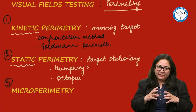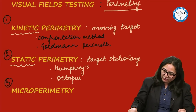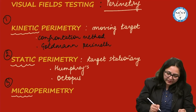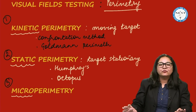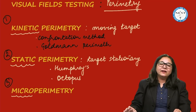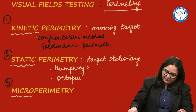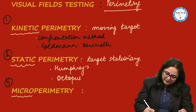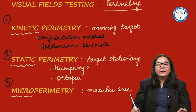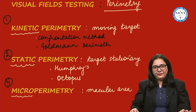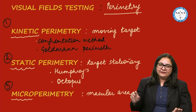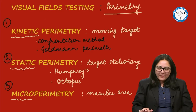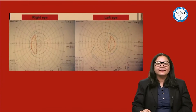The third type is microperimetry. Microperimetry involves judging a small area — 'micro' means small — specifically the central macular area. When you are measuring the visual field of the macular area, you are doing microperimetry. So the three types of visual field testing are kinetic perimetry, static perimetry, and microperimetry.